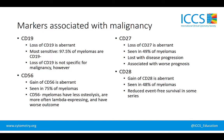CD56 is a very common marker tested for plasma cell neoplasm. In this situation, the gain of CD56 is aberrant. It's seen in the majority of myelomas, and interestingly, CD56 negative myelomas have been shown to have a worse prognosis.